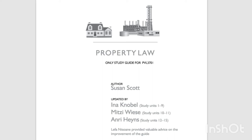The practically infinite number of objects which may be defined as things can be divided into different categories that are significant for various aspects of the law of things. We classify things in various ways, according to different criteria. All things may be classified according to either of two major criteria: firstly, the relation to humans; and secondly, the inherent nature of the thing concerned. 2.1.1 Relation to Humans. When things are classified according to this criterion, the nature of the thing is not considered, but only the function or purpose of the thing in various legal processes and transactions.